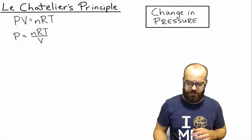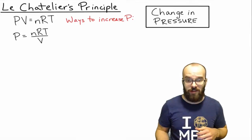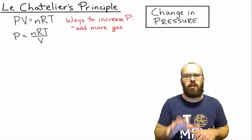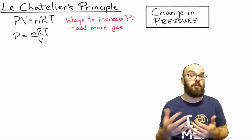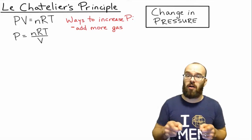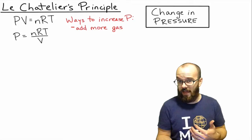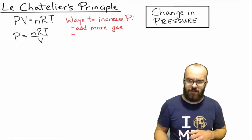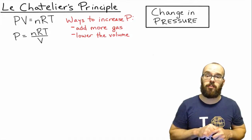So there are two main ways that we can change the pressure without changing the temperature. One is to add more moles of gas — that would increase our pressure. When I'm talking about adding moles of gas, that's going to be adding moles of some other gas not involved in the reaction. If we add moles of gas that are involved in the reaction, that's going to increase the concentration of one of the gases, and we have to analyze it the way we just did. But this would be adding some other gas that's not involved.